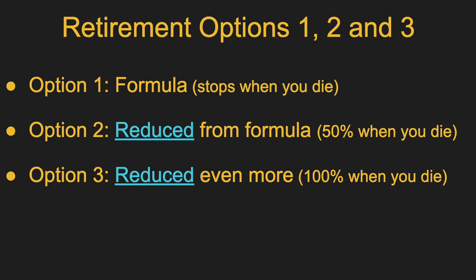Because of that, PERA offers two other options. Option 2 is a smaller monthly amount than Option 1, but if you die before your beneficiary, they will continue to get 50% of your check for their lifetime. Option 3 is reduced a little bit more, but if you die before your beneficiary, your beneficiary will continue to get 100% of your check for their lifetime.